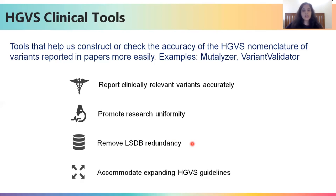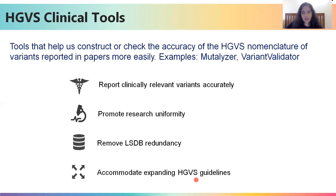The HGVS nomenclature guidelines themselves are always expanding to incorporate more and more details about variants. Therefore, the only way to keep up to date is either to keep reading up on them or to use these tools that can help us report variants in the current accurate nomenclature.